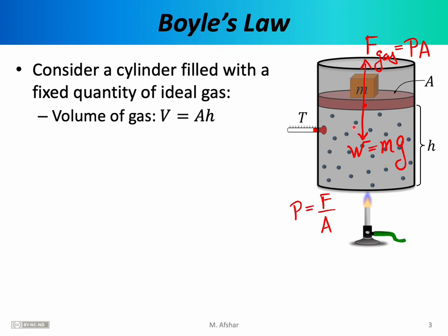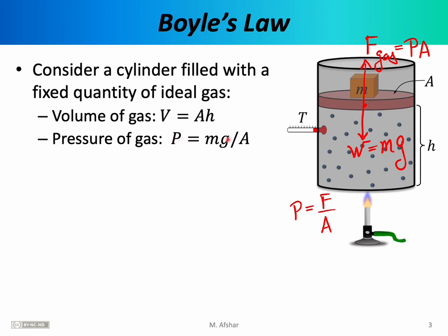Notice that the volume of the gas can be expressed in terms of the height of the gas. More precisely, the volume of the gas is equal to the cross-sectional area of the piston times the height of the cylinder — at least the portion filled with gas. Also note that we can express the pressure of the gas in terms of mass. By measuring this mass, we can figure out what the pressure of the gas inside is. When the piston is in equilibrium, PA must equal mg. Solving that equation, we find that the pressure of the gas equals the weight of the mass divided by the area of the piston.